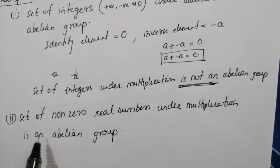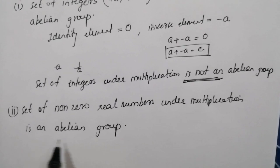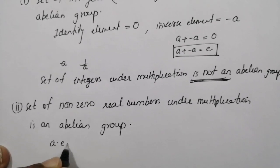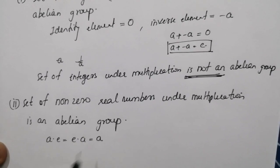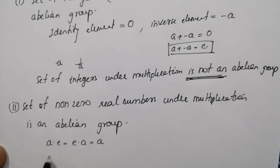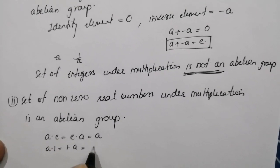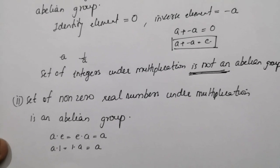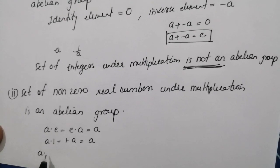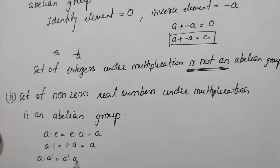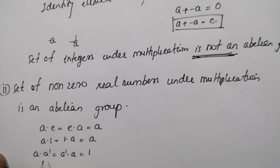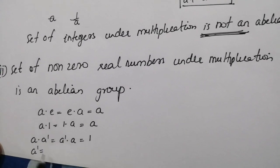The second example is the set of non-zero real numbers under multiplication, which is an abelian group. We know that a·e = e·a = a, and under multiplication the identity element will be 1 — that is, a·1 = 1·a = a. For the inverse element, a·a' = a'·a = 1 (the identity element), so a' = 1/a.